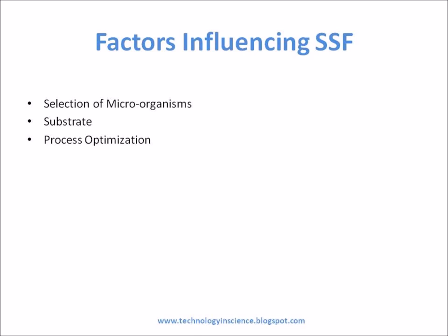Factors Which Influence Solid State Fermentation — Selection of Microorganisms: This is one of the key factors for improved yields of the product. Bacteria, yeast, and filamentous fungi can be used. Filamentous fungi have shown better results when growing in solid substrate.